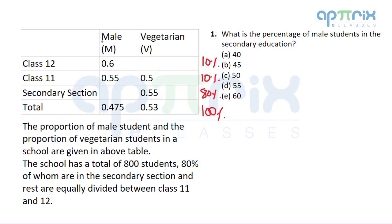One thing you have to understand: we are given the male percentage. So if I get that there are certain number of students in a particular class and I am given the male percentage, then definitely I know the female percentage. Like here in class 12, if 60% of class 12 students are male, the remaining 40% are female. But there is also the variable of vegetarian and non-vegetarian. We have to look at this case in totality so we can solve the questions easily. One way of doing this is assuming the total 100% to be 800 and making a complete table with male, female, vegetarian, non-vegetarian. But my purpose is to solve with minimal effort.